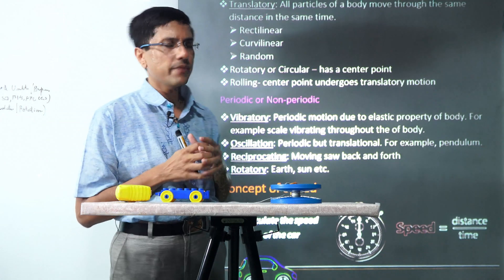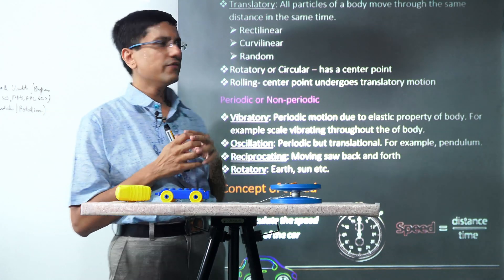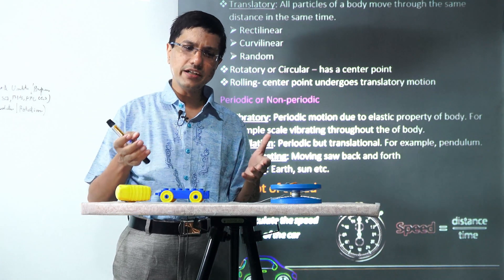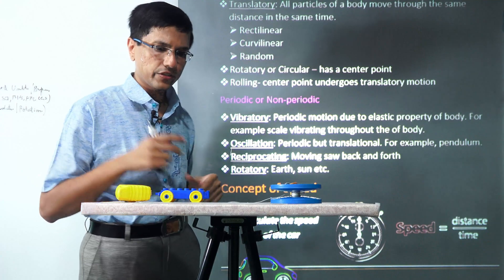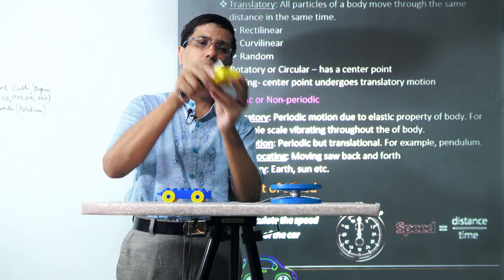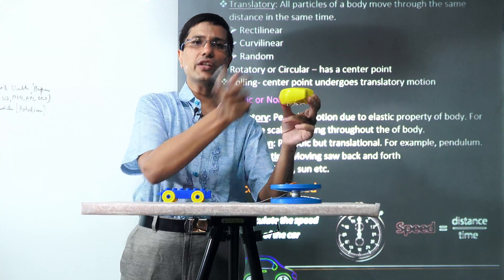There are two main kinds of motion. One is translatory, the second one is rotary. Translatory motion can be divided into three kinds. Translation happens when the thing moves as a whole from one place to another. This is translation.